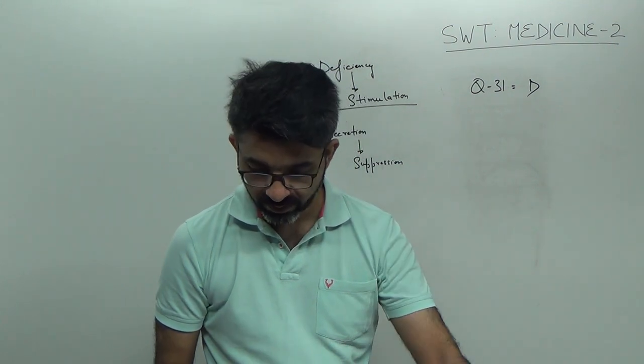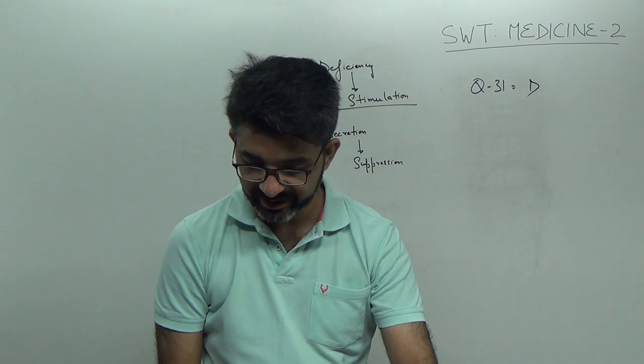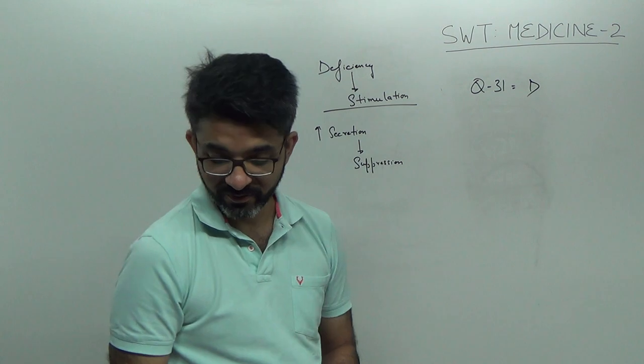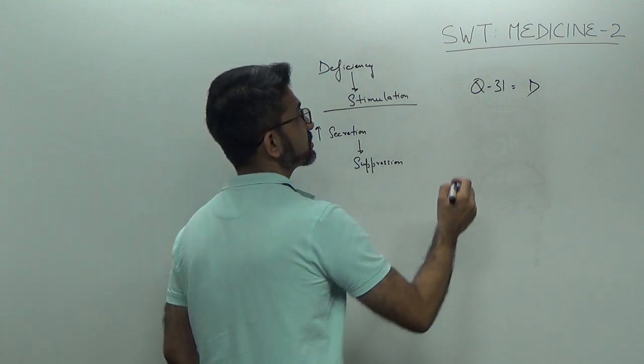Question number 32. Which of the brain tumor spreads via CSF? Remember, medulloblastoma spreads via CSF. Answer is B.